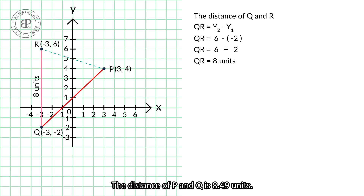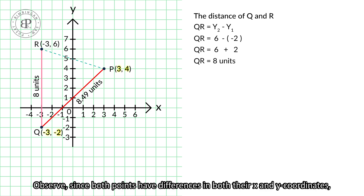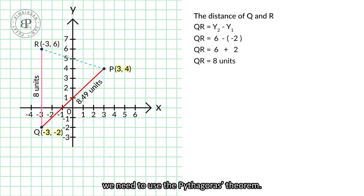The distance of P and Q is 8.49 units. Observe, since both points have differences in both their x and y coordinates, we need to use the Pythagoras theorem.